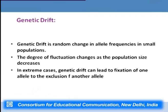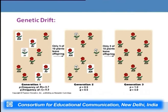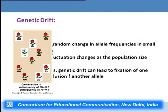Genetic drift is a random change in allelic frequency in small populations. The degree of fluctuation of allelic frequency increases as population size decreases — smaller the population, the higher the degree of fluctuation. In extreme cases, genetic drift can lead to fixation of one allele to the exclusion of another, as in the example where capital R allele became fixed and small r was eliminated from the population.